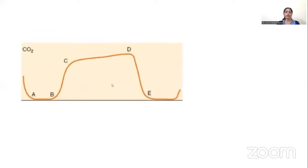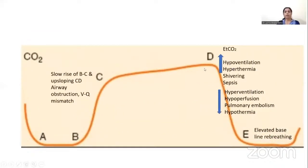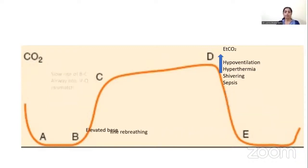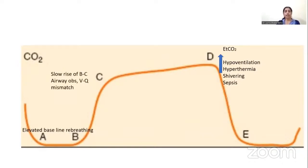The normal capnogram has many shape and size changes that warn of clinical problems. Point D represents the maximum level of carbon dioxide where end-tidal CO2 is calculated. If end-tidal CO2 suddenly drops to zero with loss of the capnogram waveform, it may indicate disconnection of the sampling line or a potentially life-threatening situation such as acute severe hypotension, massive pulmonary embolism, circulatory arrest, or displacement of the endotracheal tube into the esophagus. Adequacy of pulmonary ventilation should be checked immediately. If the baseline does not return to zero, re-breathing of expired gases should be suspected.